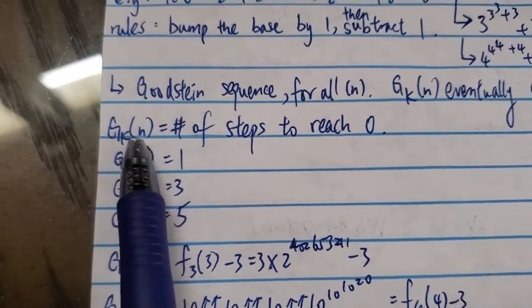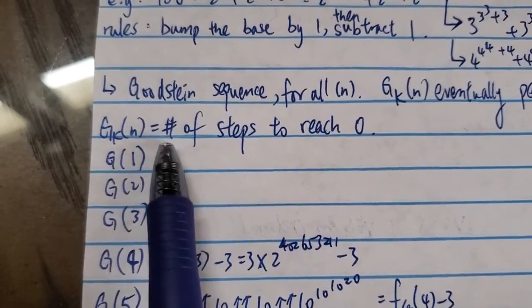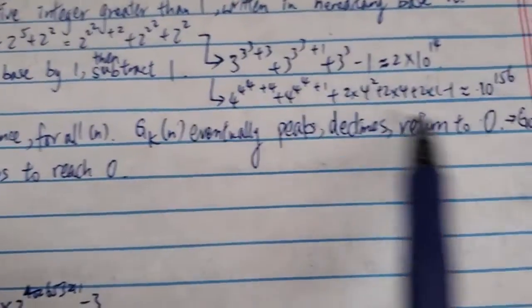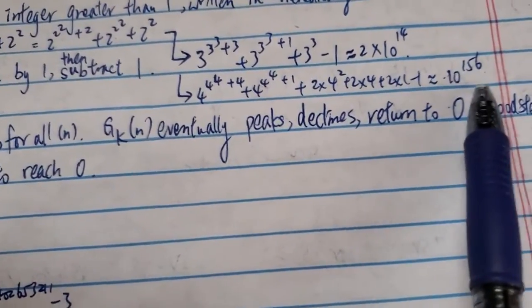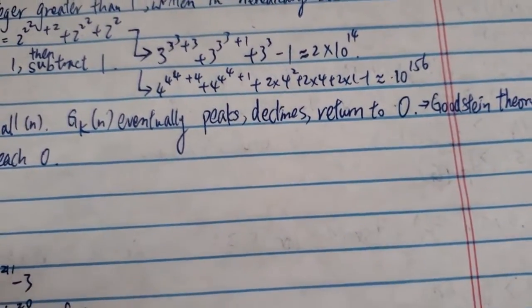Anyway, so this sequence, Goodstein sequence, it's the number of steps for this thing at the end to reach zero. So this number would grow bigger and bigger and bigger. It grows very fast.